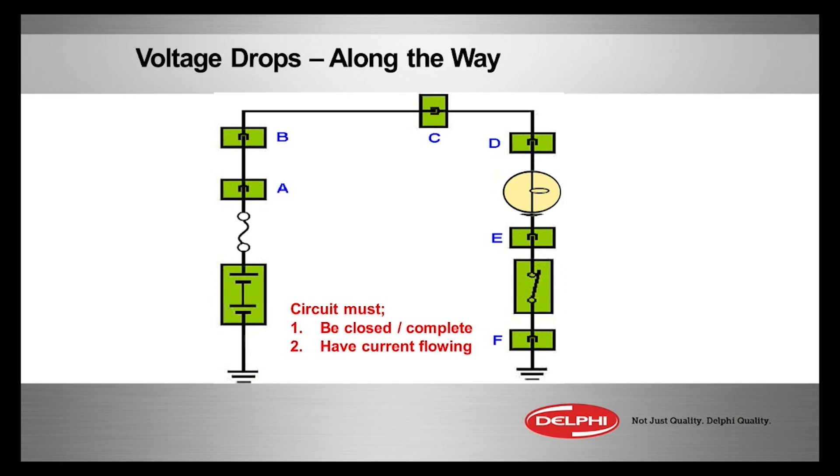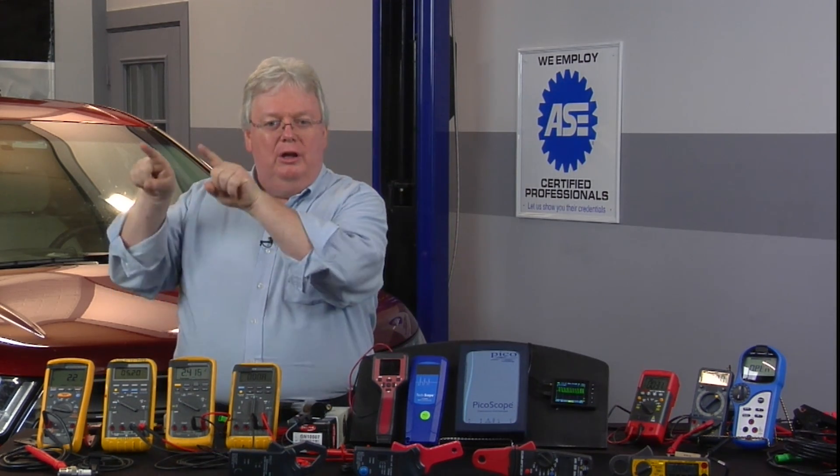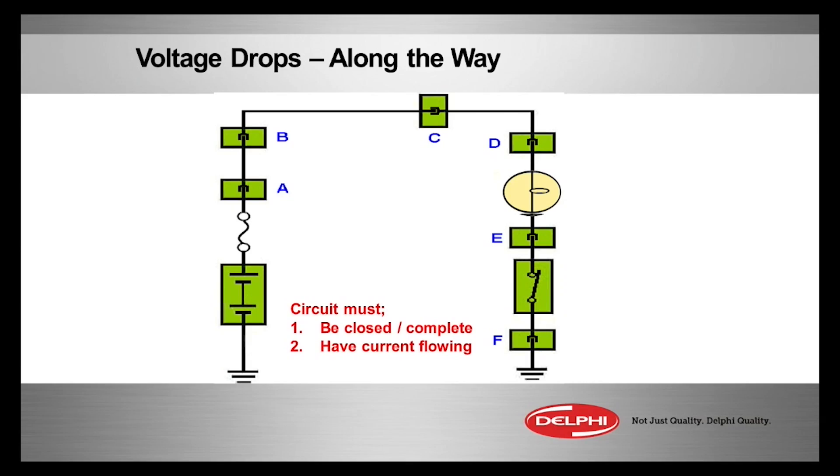Now the way I prefer to do it is where you take both leads of the meter and put it along the circuit along the way. You can do that across points A and B. You should see less than point one. You can put your meter between C and D. You should be less than point one volts.